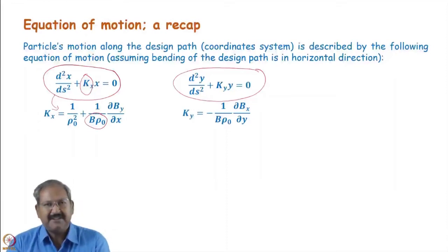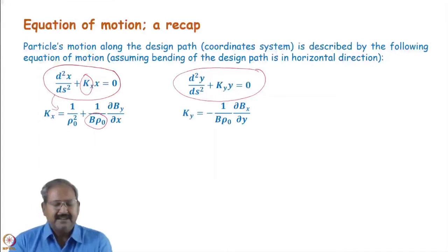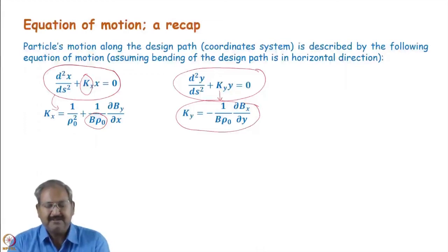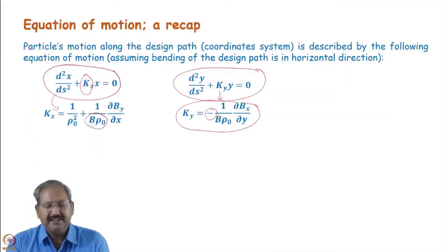Normalization by magnetic rigidity actually makes our calculation energy independent. So everywhere in accelerator physics, you will see that formulations have been normalized by the magnetic rigidity. Similarly, in the vertical plane, we have Ky as the gradient in the magnetic field normalized by magnetic rigidity. However, there is a minus sign, meaning the gradient in the horizontal plane has the opposite effect compared to the vertical plane.